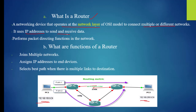A router performs a packet directing function in the network. For example, let's say this network and this network — this host wants to communicate with the other host. First of all, it will send a packet to this router. The router will know that PC1 wants to communicate with PC2, and it will forward the traffic to the right node so that PC2 can receive the packet. So, it directs packets in the network.